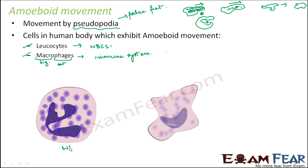Here you can see a WBC — the leukocyte — and this is how they look. In leukocytes there are different types like neutrophils, eosinophils, and basophils. They have a defined shape and move by protoplasmic extension. This is also a macrophage and this is how it looks. These are some of the cells inside the human body which move by amoeboid movement.